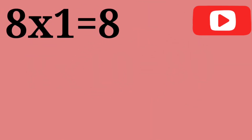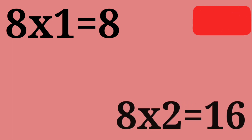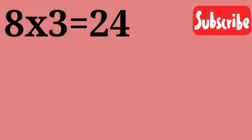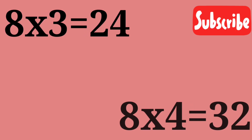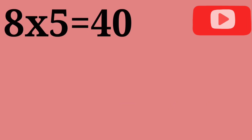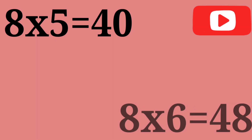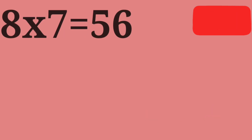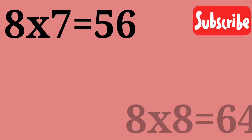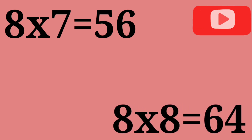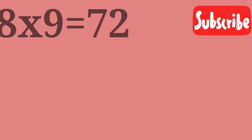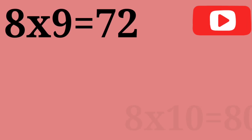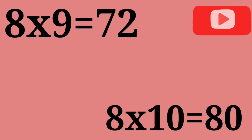8 ones are 8. 8 twos are 16. 8 threes are 24. 8 fours are 32. 8 fives are 40. 8 sixes are 48. 8 sevens are 56. 8 eights are 64. 8 nines are 72. 8 tens are 80.